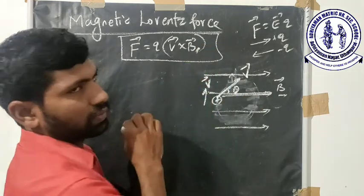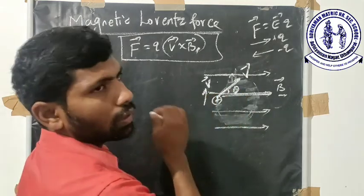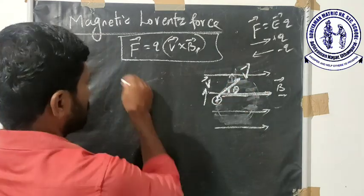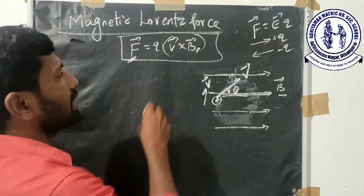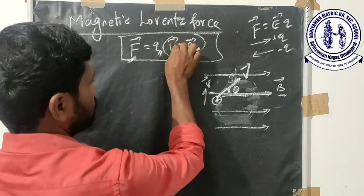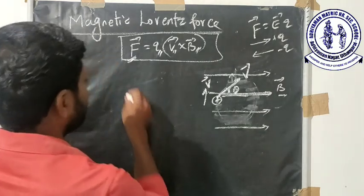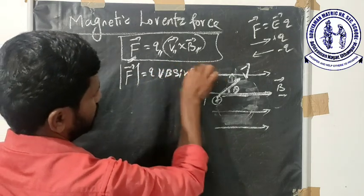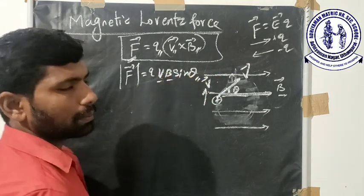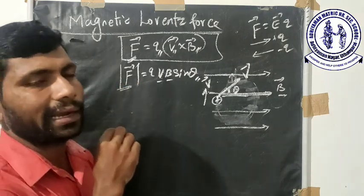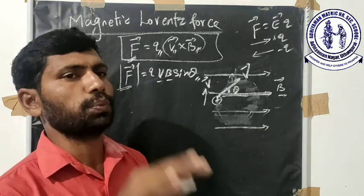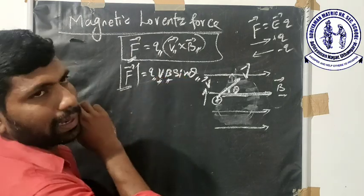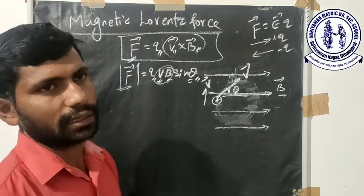The charged particle placed in a uniform magnetic field experiences a force. The magnitude of the Lorentz force — the force on a charged particle in a magnetic field — is directly proportional to the magnitude of the charge, directly proportional to the velocity, directly proportional to the magnetic field, and directly proportional to the sine of the angle between the velocity and the magnetic field. Therefore, F vector equals Q into VB sin theta, where theta is the angle between velocity and the magnetic field.